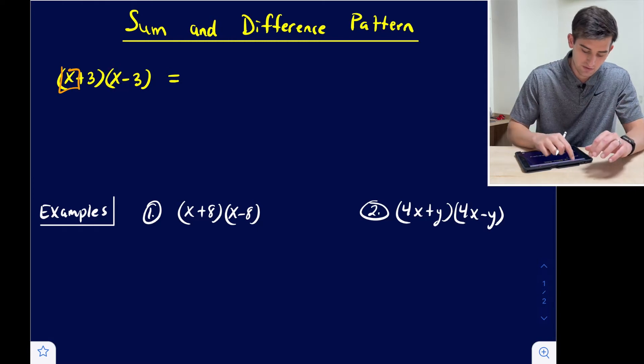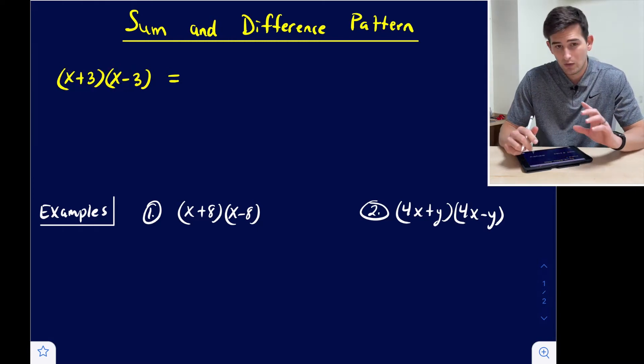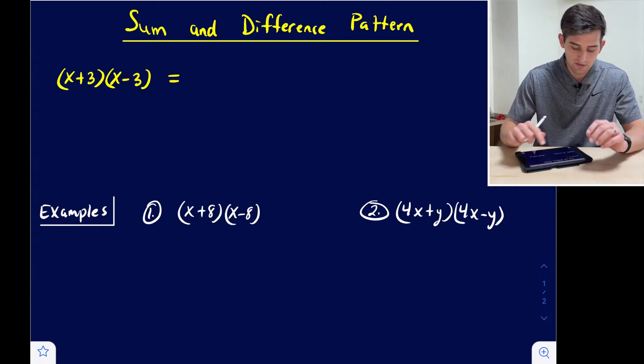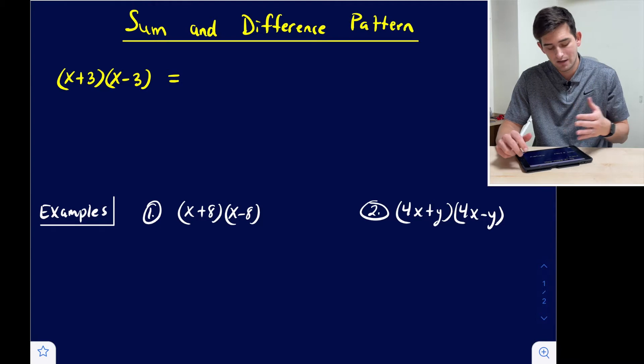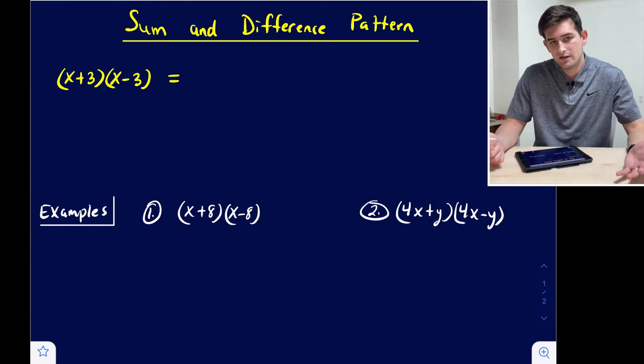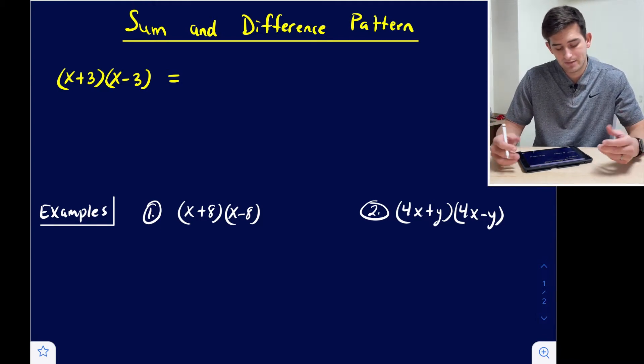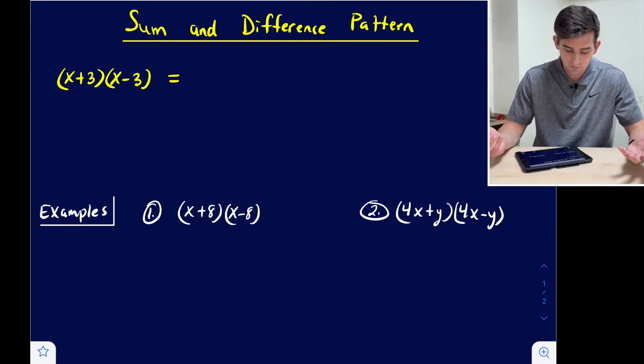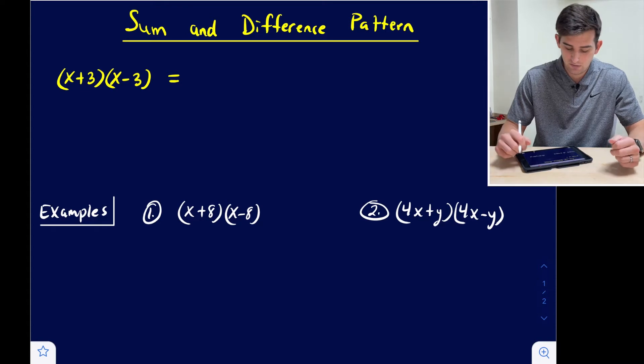Here we have x on both terms and we also have a 3 on both terms. Now one of our binomials needs to be addition and one needs to be subtraction. So in order for us to use the sum and difference pattern, this is how it needs to be set up. Let's foil x plus 3 times x minus 3 to see if we can come up with a pattern that we would use when we're presented with a sum and a difference binomial like this.